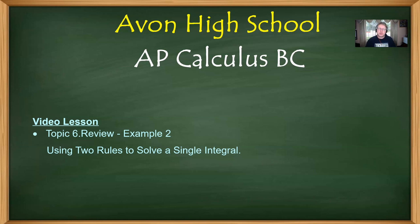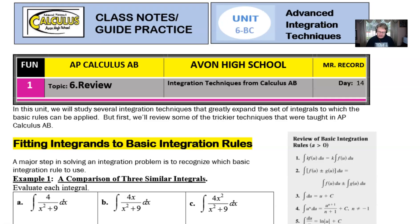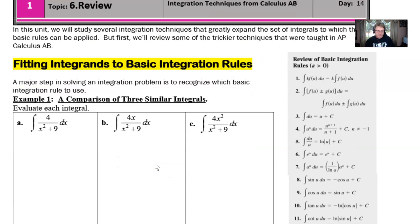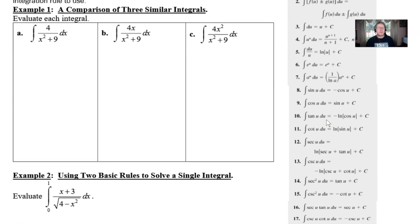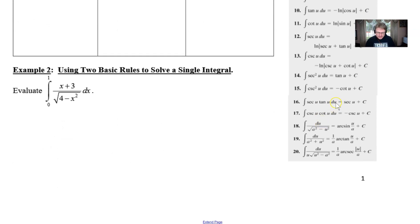We're going to take a look at example two where the focus is a problem that actually has two different approaches that you're going to use to integrate and ultimately find the anti-derivative. So if we take a look at our notes here we already went through example one and we talked about the vast array of formulas of which there are 20 that we want to get very comfortable with. Two of these ideas we'll probably be using in our example number two here.